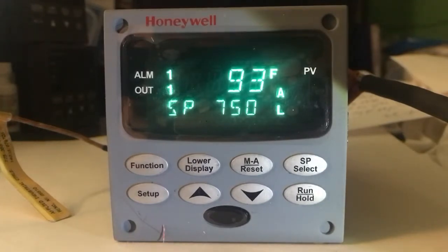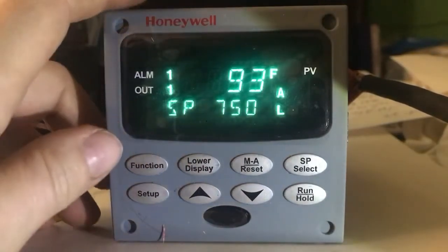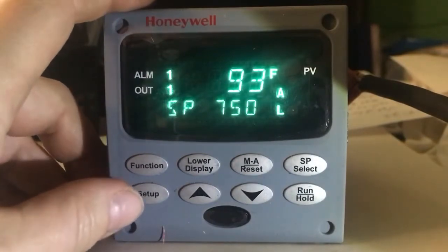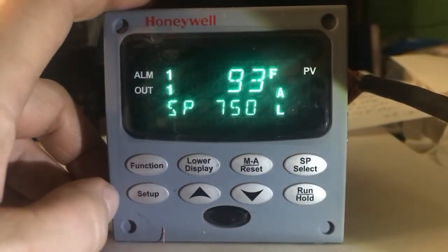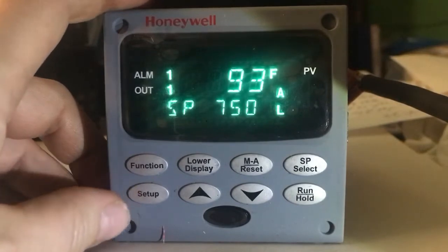Today I wanted to talk about the UDC 2500 and how to change the input type if you want to use a different thermal couple, for example. The way you find that is in the input section, the input group.